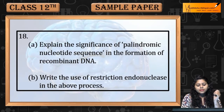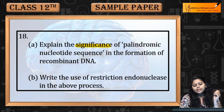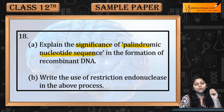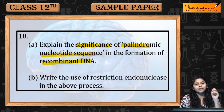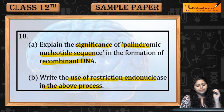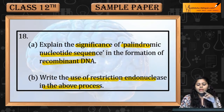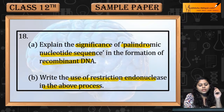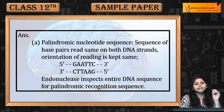Question 18: Explain the significance of palindromic nucleotide sequence in the formation of recombinant DNA. Write the use of restriction endonuclease in the above process. First, let's discuss the significance of palindromic nucleotide sequence when recombinant DNA is made.